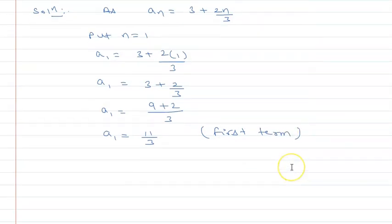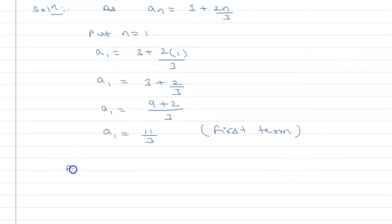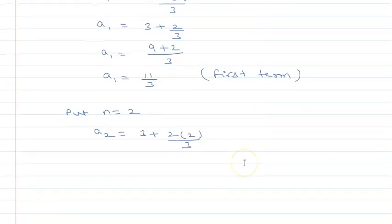For n = 2, a2 = 3 + 2(2)/3, so (9 + 4)/3 = 13/3. This is the second term.